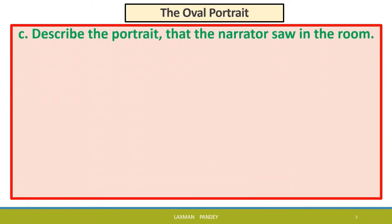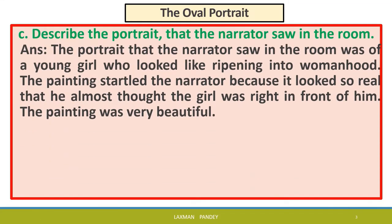Describe the portrait that the narrator saw in the room. The portrait that the narrator saw in the room was of a young girl who looked like she was ripening into womanhood. The painting startled the writer because it looked so real that he almost thought the girl was right in front of him.